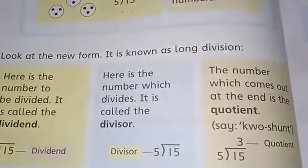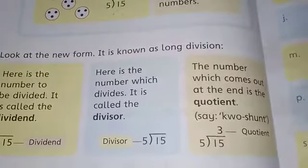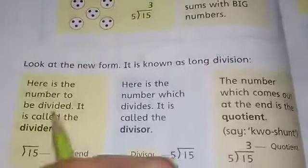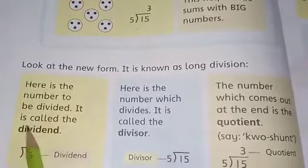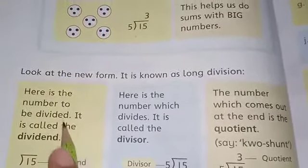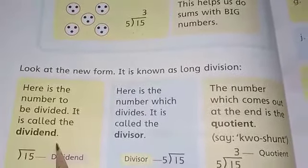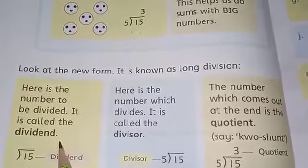Look at the new form. It is known as long division. This new form we know by the name of long division. Here is the number to be divided; it is called the dividend. The number you have for division, you will call it dividend.